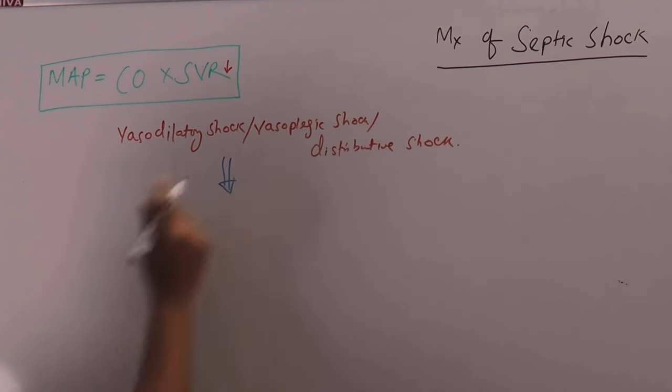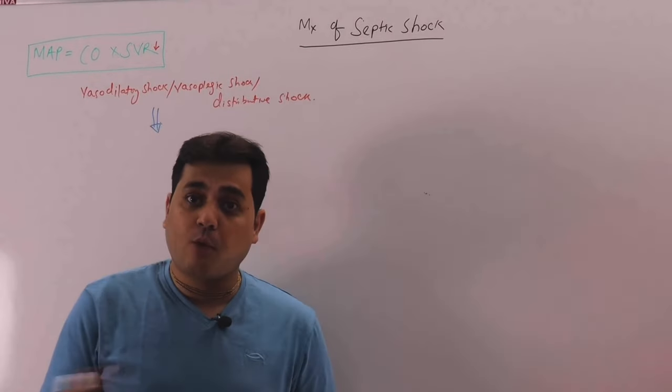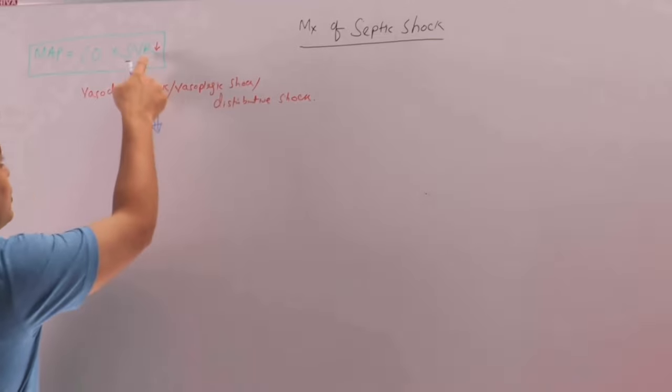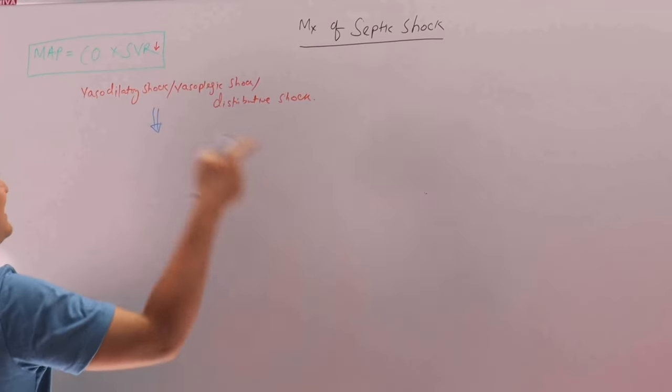The pathology of septic shock is such that there is widespread vasodilatation throughout the body which causes the SVR to go down and the mean arterial pressure to go down. The perfusion decreases and there is shock.